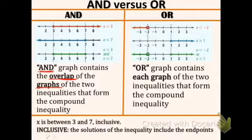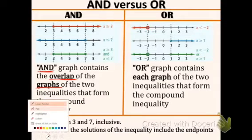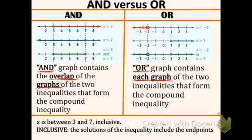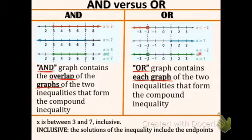Now let's look at OR — it is quite different. An OR graph contains each graph of the two inequalities. As you can see in the graph, we have one going to the left and one going to the right. They do not overlap, so the OR graph is just the combination of both. They don't overlap, so overlap is not possible at all.